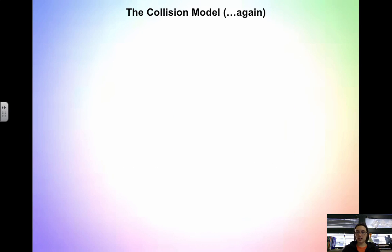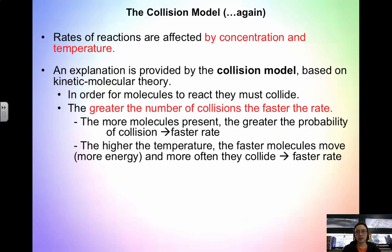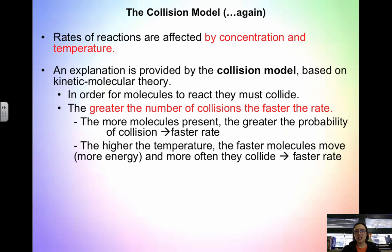There has to be some explanation of why rates are affected by concentration and by temperature. One explanation is provided by the collision model. In order for molecules to react, there have to be collisions between the two, and the greater the number of collisions, the faster the rate. When we look at concentration, the more molecules we have present, the more likely they are to collide. When we look at temperature, the faster the molecules move, the more energy they have, the more often they collide, and the faster the rate.